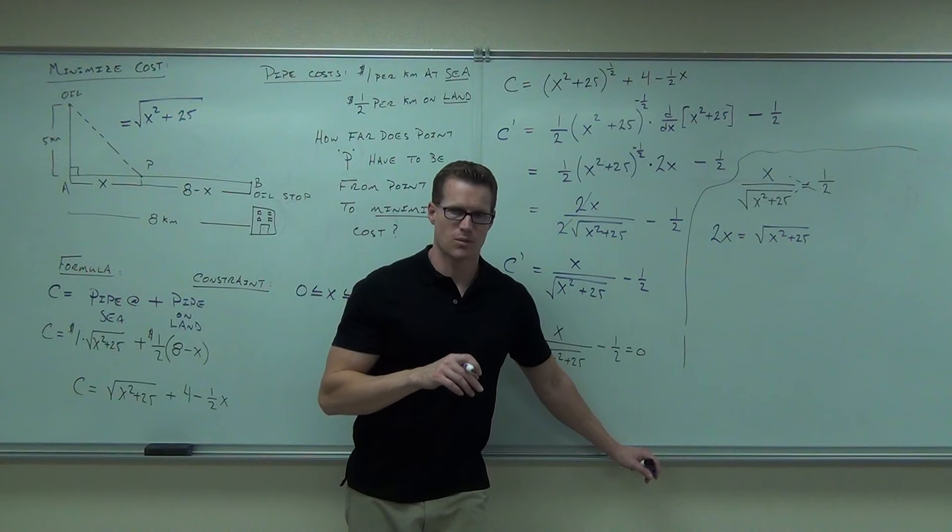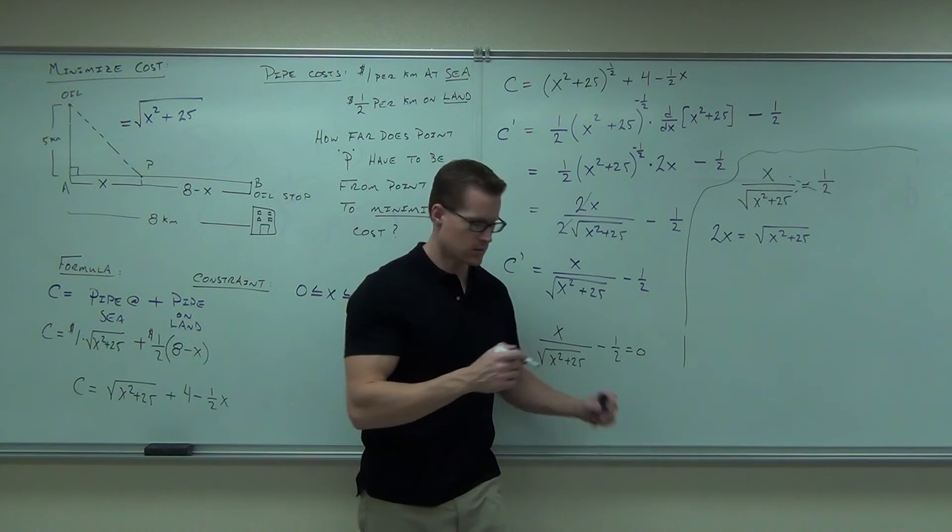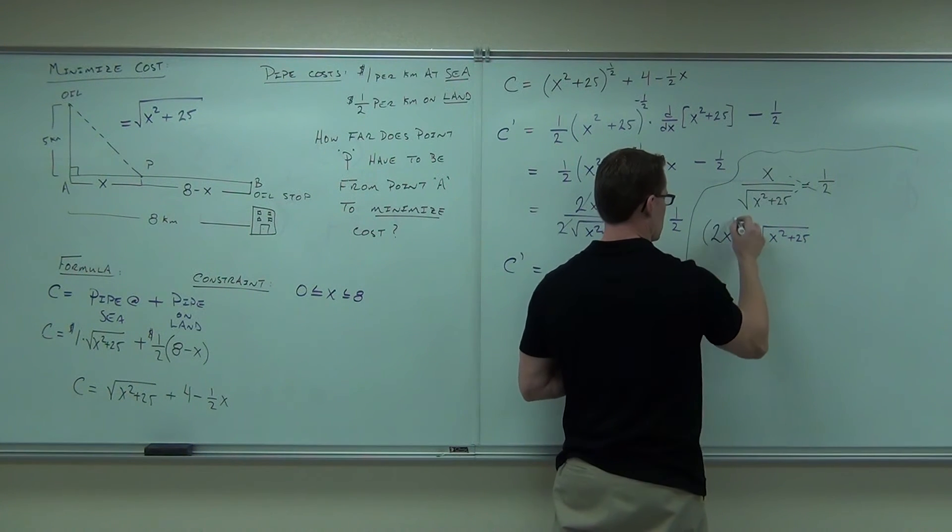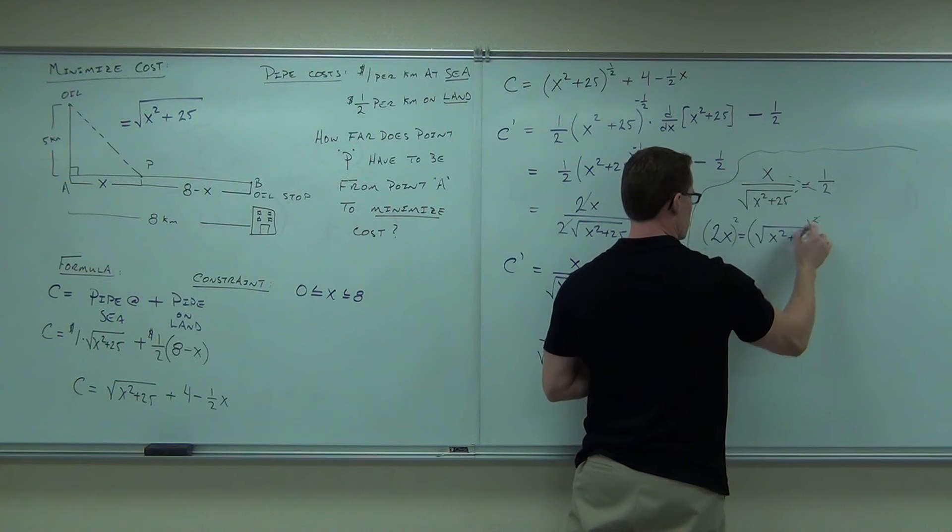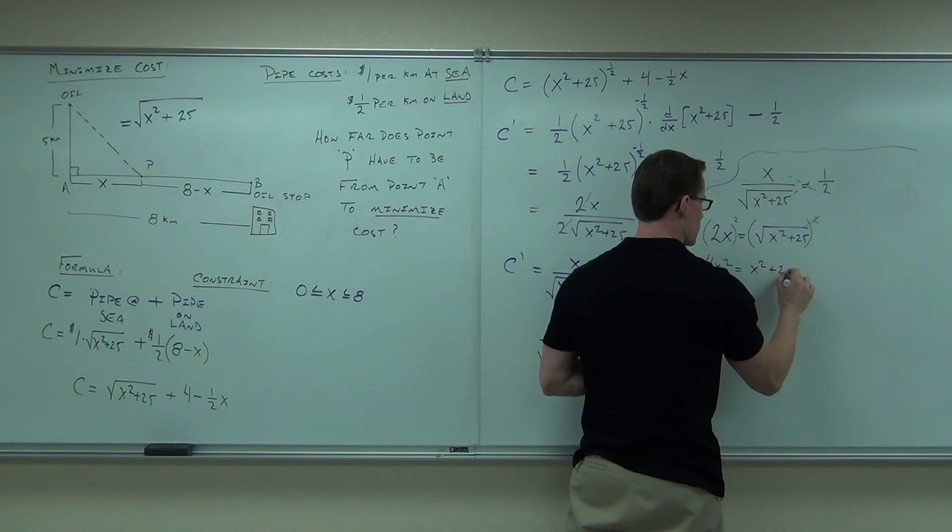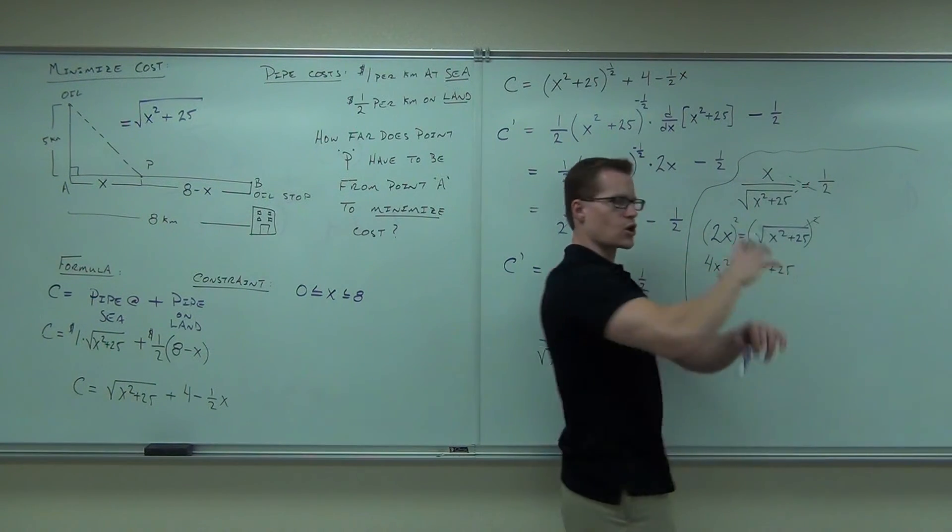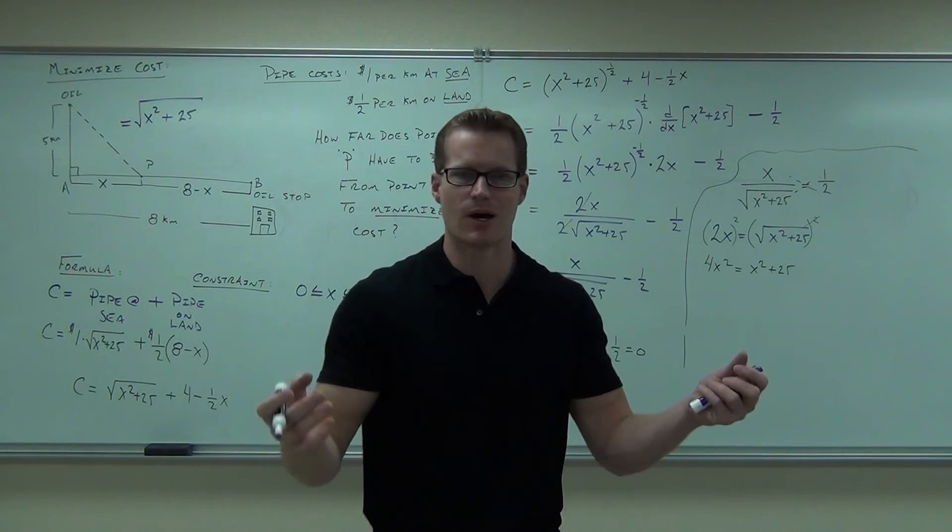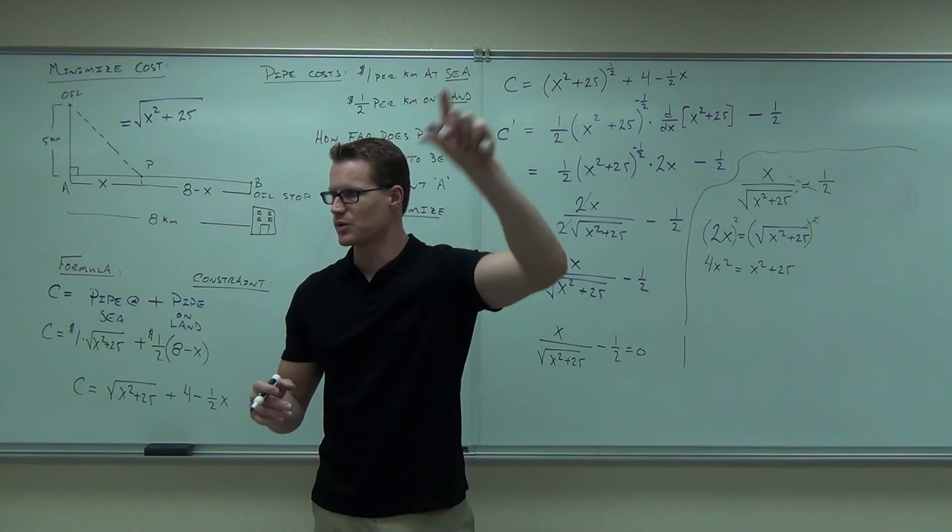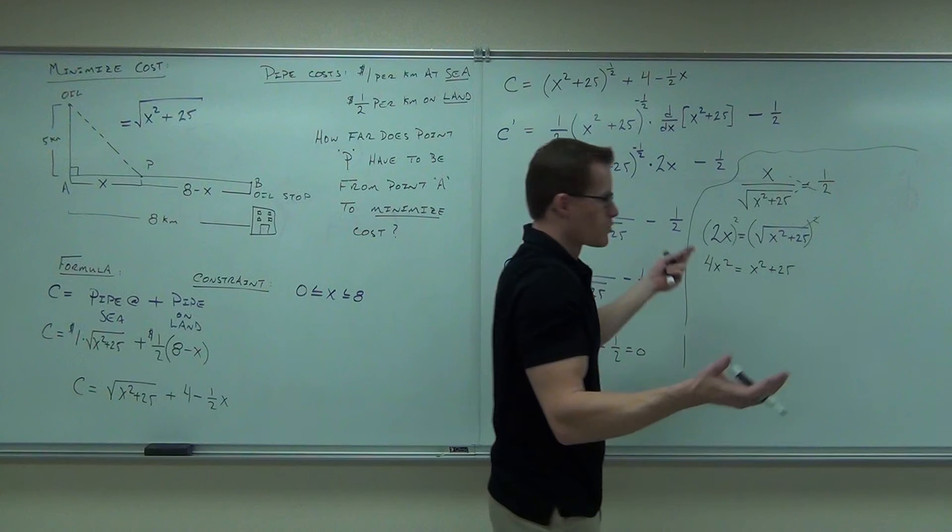Square, square. Gone. 4x squared equals x squared plus 25. Nothing changes. No distribution. The square and the square root, those are gone. They're inverse exponents. In fact, if you think about it, it's actually 1 half to the second power, right? You multiply exponents when they're being raised to each other, that means 2 times 1 half is 1. So it just disappears. It's great.